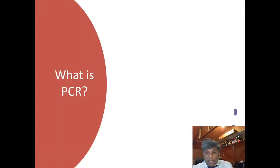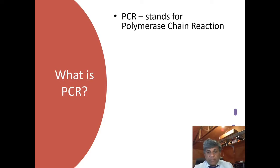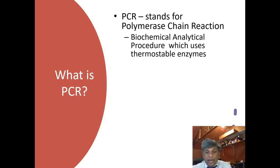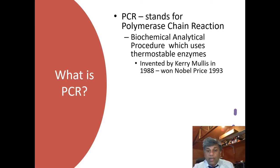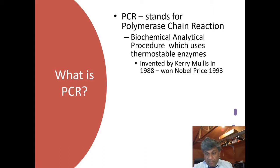So, what is PCR? PCR stands for polymerase chain reaction, and it's a biochemical analytical procedure which uses thermostable enzymes — in other words, enzymes which work under extremely high temperatures. It's a process that was invented by Kerry Mullis in 1988, and it's such an important process that he won the Nobel Prize in chemistry in 1993.